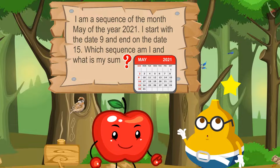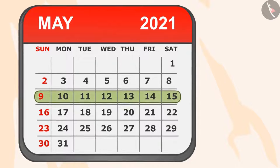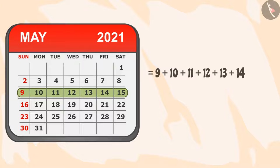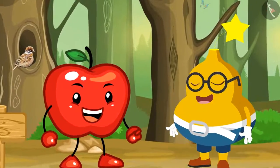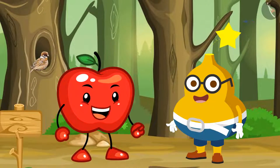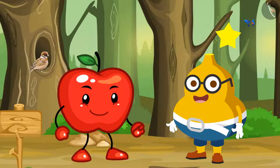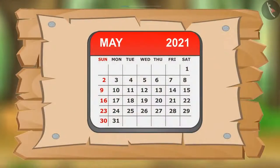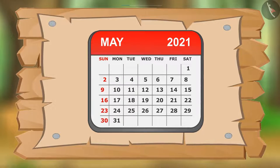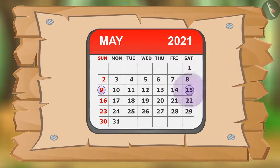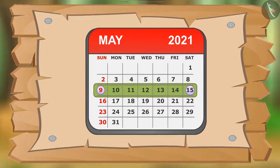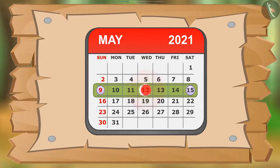Meanwhile, Fruity says: The sequence is this row, and the sum — the addition of all numbers — is 84. Appie says: Right! But how did you answer so quickly? Fruity says: The sequence of the month May in the year 2021 that starts with 9 and ends on 15 is this row here.